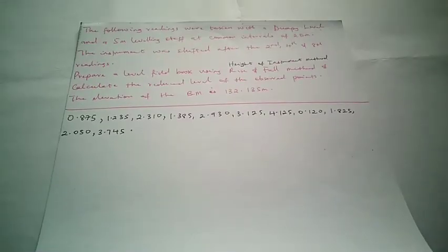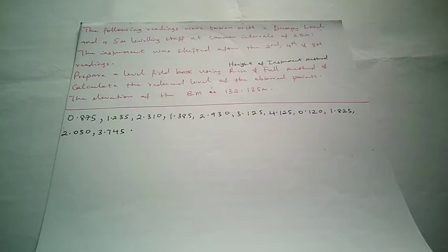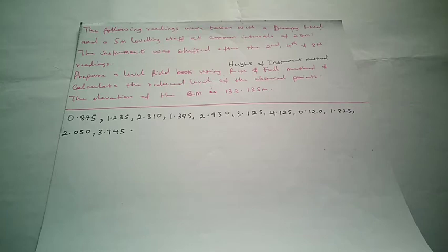Hello guys, welcome to Surveying Solutions, the number one channel where you get solutions to your surveying problems. On our last video we used the rise and fall method to solve a particular leveling problem. On this video we are going to use the height of instrument method, or the collimation method, to solve that same problem. We previously explained basic terms like backsight, foresight, intermediate sights, benchmark, and so on.